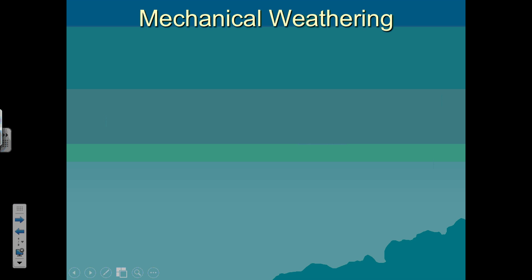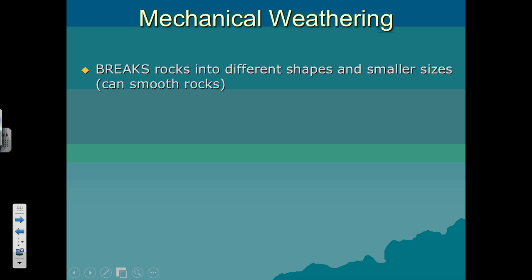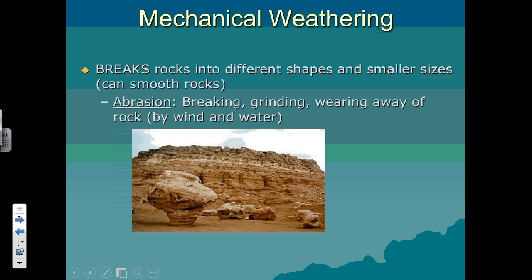There are two types of weathering. The first is mechanical weathering. Mechanical weathering is basically the breaking of rocks into smaller pieces, and this can happen through abrasion — where you have windblown sand particles eating away at the rocks around them.